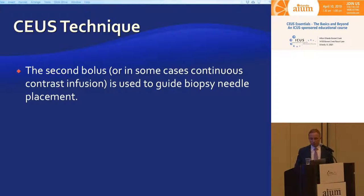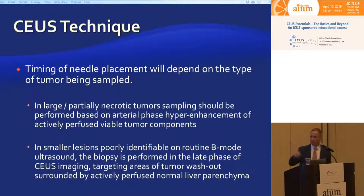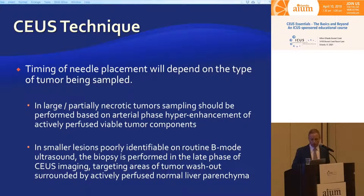When you biopsy metastatic lesions, the second bolus injection is performed for actual guidance. You can do it in two ways: either as a bolus with contrast delivered and then biopsy quickly while bubbles are circulating, or as an infusion where you drip the diluted contrast in saline over a longer period to biopsy metastatic lesions that show as areas of washout.